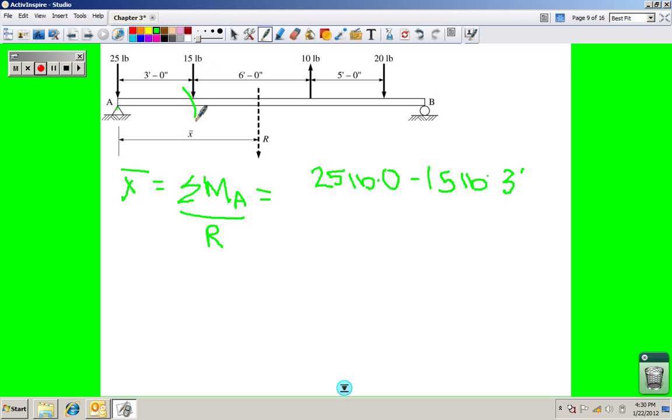That's a negative moment. That's going to tend to cause a rotation in this direction, right? Then we're going to have a 10 pound force. It's pushing up, and it is going to be positive moment. It's going to tend to cause a rotation in this direction. So that will be plus 10 pounds times 6 feet plus 3 feet, 9 feet. Then the last one is the 20 pound force, and that is 20 pounds times 9 feet plus another 5 feet. That's 14 feet.